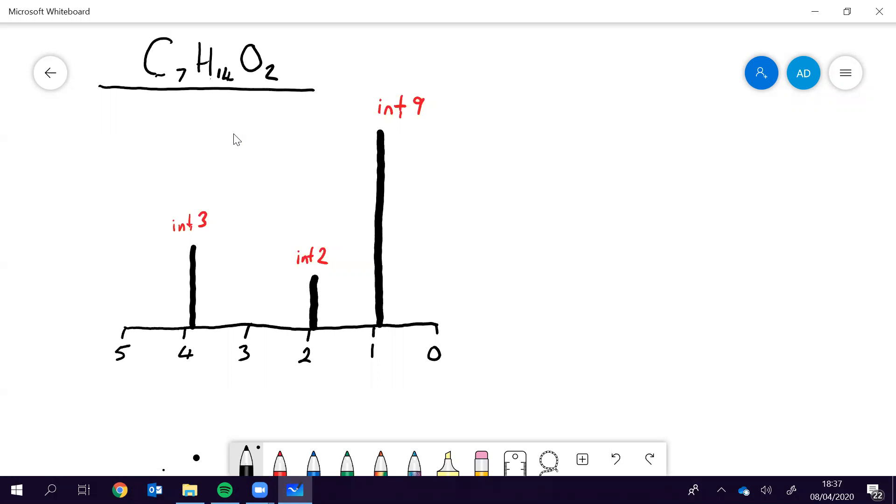So the first thing we do, as usual, is look at the carbon to hydrogen ratio. CnH2N here, so that means it does contain a double bond.